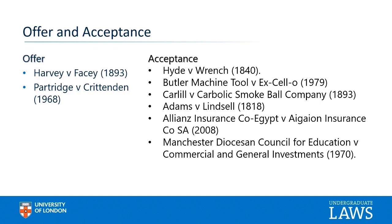To be effective, an offer must be communicated in the sense that the offeree — the person who will accept — knows of the existence of the offer. There can be no acceptance of an offer without knowledge of it. The reason for this requirement is that if we say a contract is an agreed bargain, there can be no agreement without knowledge. There can be no meeting of the minds if one mind is unaware of the other. An acceptance cannot mirror an offer if the acceptance is made in ignorance of the offer. The authorities are, however, divided on the need to communicate the offer.